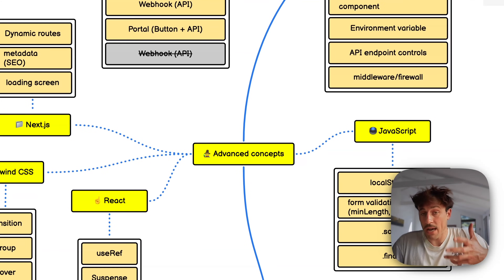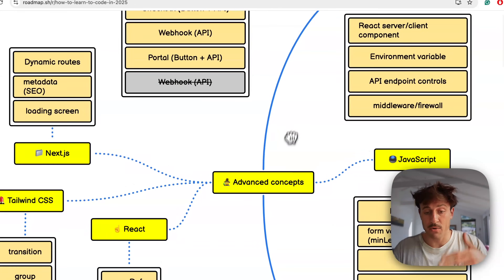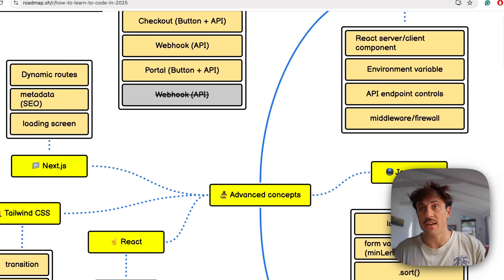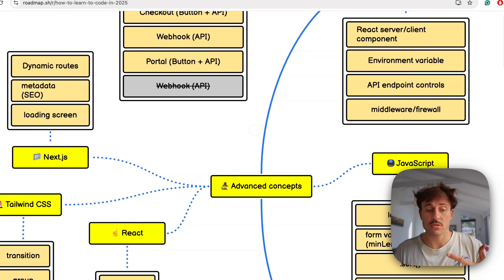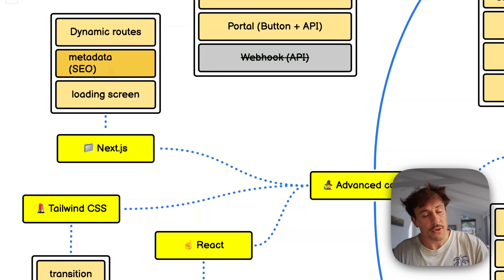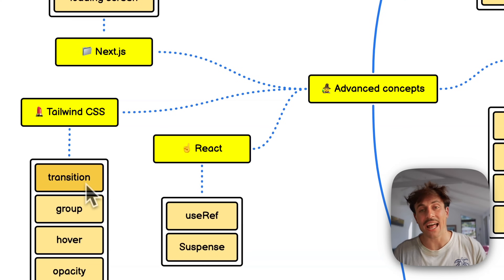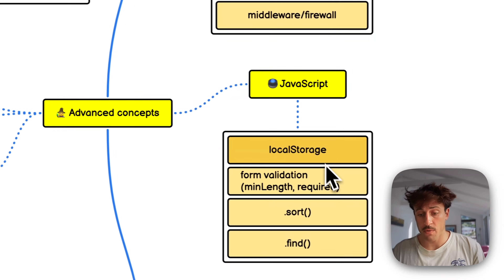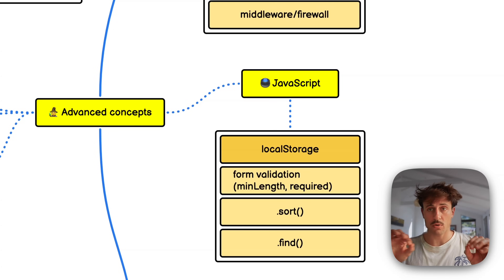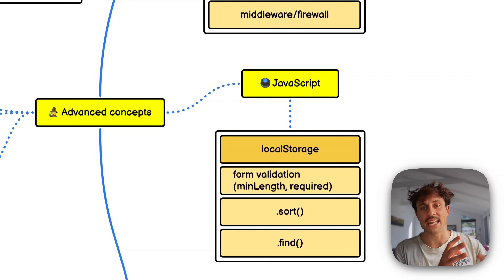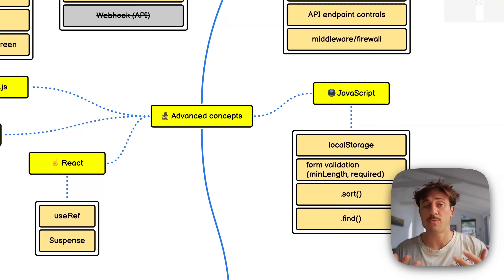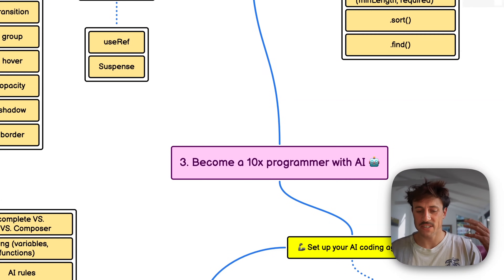There are some advanced concepts worth learning when you have a strong use for them. In Next.js, learn how to use metadata so your app can be indexed and ranked on Google. You can learn Tailwind CSS transitions and animations to make your app nicer to use. JavaScript's localStorage is a great place to store data without needing a database.